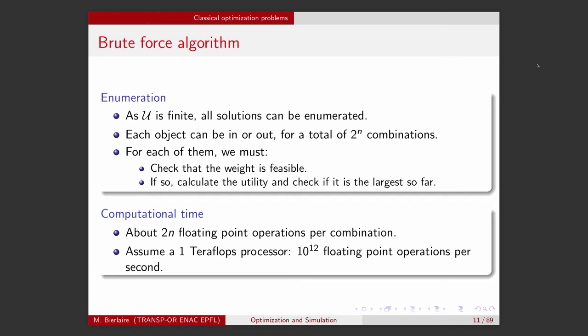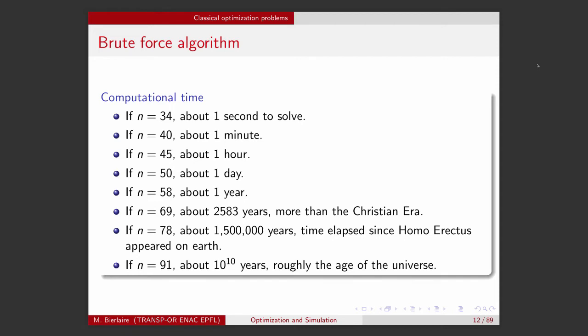Let's look at the computational time of such a brute force algorithm with the following assumptions. The calculation of the weight is about N floating point operations — we need to calculate for each item the product between the utility and the variable X, and the same for the utility. So for each combination there are about 2N floating point operations. Assuming a one teraflops processor — capable of 10 to the 12 floating point operations per second — if the number of items is 34, this would take about one second to solve.